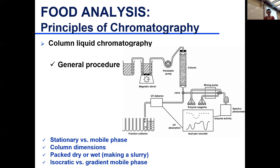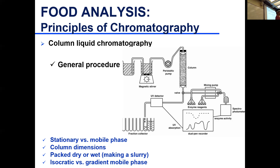Gradient elution is very common in chromatography. With gradient elution, you have two, three, or sometimes four solvents that you mix throughout the run, thereby changing the concentration of the mobile phase over time.